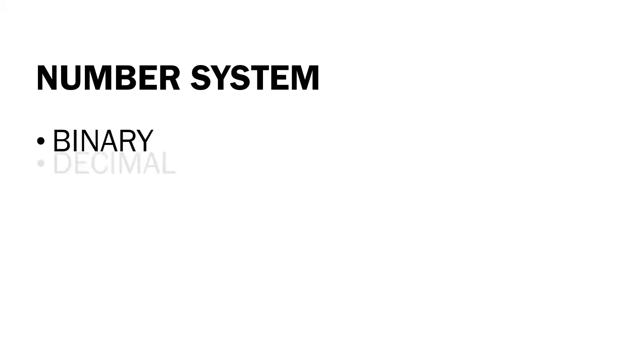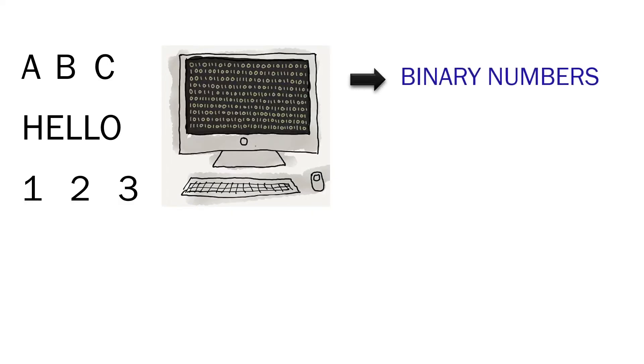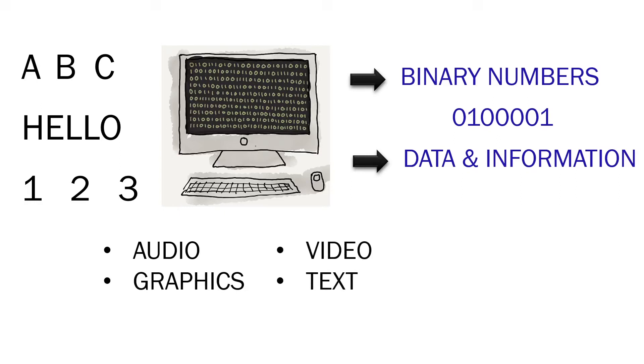Hey guys, this is Ping Point. In this video we will talk about the set of values used to represent different quantities, which is known as the number system. There are four types of number system: the binary, the decimal, the octal, and the hexadecimal. When we type letters, words, or numbers, the computer translates them into binary numbers, as computers can understand only binary numbers. Computers represent all kinds of data and information in binary numbers — it includes audio, graphics, video, and of course text and numbers.